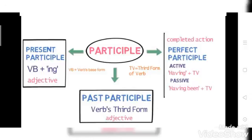In present participle, जो verb होगा उनके साथ आपको ing add करना है. Then जब आप ing add करेंगे, तो ये adjective की तरह function करेंगे sentence में. Past participle में जो verb आप use करेंगे, वो third form use करेंगे, and ये adjective की तरह ही function करेंगे.